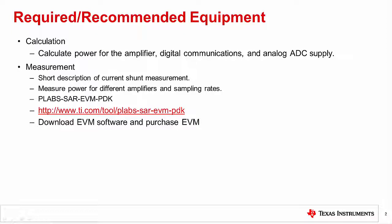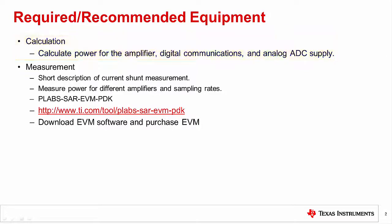In the last Precision Labs, we described in detail the steps involved in calculating power for different amplifiers and different sampling rates. For this lab, we will quickly review and summarize this procedure. We will use hand calculations to find power for six different configurations, have a short discussion describing the operation of the measurement circuit, and finally measure the power for these circuits and compare it to the calculated results.